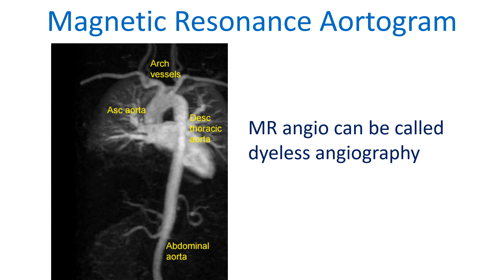The changes in hydrogen nuclei in response to a magnetic field form the basis of MR imaging. Since hydrogen nuclei are plentiful in blood, which has a high water content, blood vessels can be imaged well in MRI.